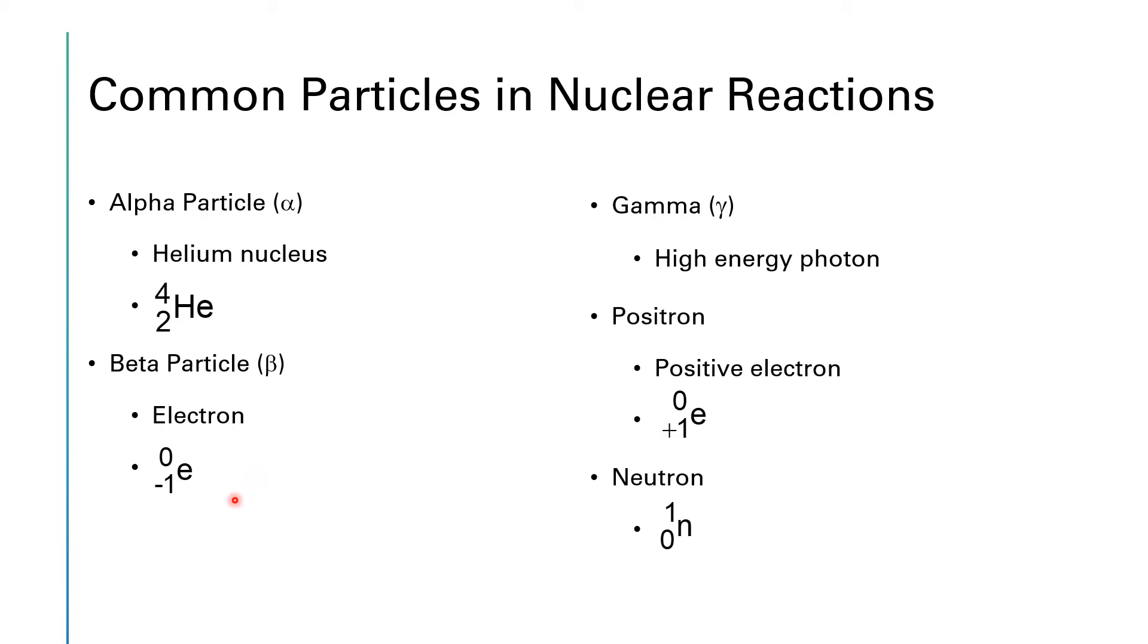A gamma particle is actually a photon. It's a high energy photon, and its symbol is just gamma. A positron is a positively charged electron, and its symbol will be zero plus one E. And then a neutron will have a symbol of one zero N. All of these particles frequently appear in nuclear reactions. So it's really important that you can keep track of which one is which.